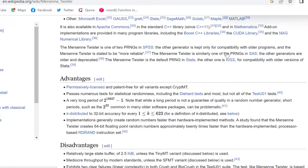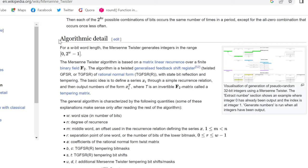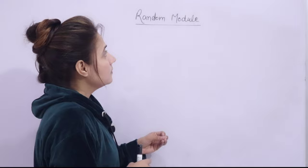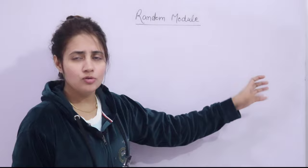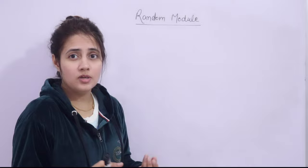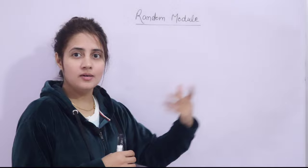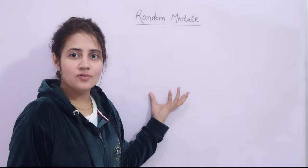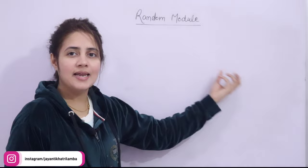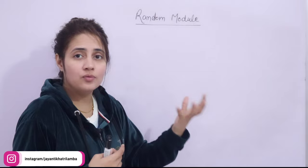If you're interested in the details you can read that algorithm, but it has already been created for you. Random is a built-in module in Python — you just have to use it. It's like buying coconut water from the market rather than growing a coconut tree yourself. Someone has already done that work; someone has already created the random module, and you can directly use it with whatever functions are available in that module.